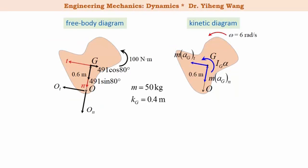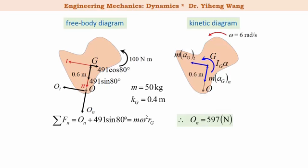Now we write the equations of motion. First, the resultant force along the normal direction includes the unknown O_N and the normal component of the weight force, and equals m times omega squared * R_G. Omega is 6 rad/s and R_G is 0.6 m, so this equation has only one unknown, O_N, which can be solved. Next, the resultant force along the tangential direction includes the unknown O_T and the tangential component of the weight force, and equals m * alpha * R_G, which becomes 30 * alpha. This equation has two unknowns, O_T and alpha, so we cannot solve it alone.